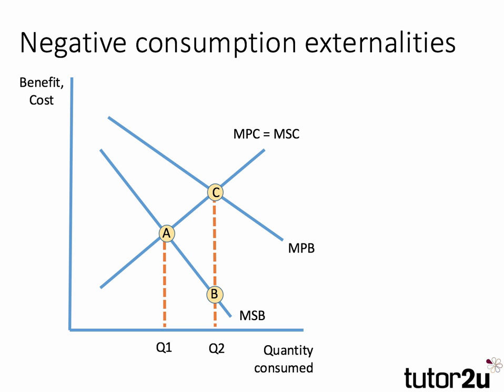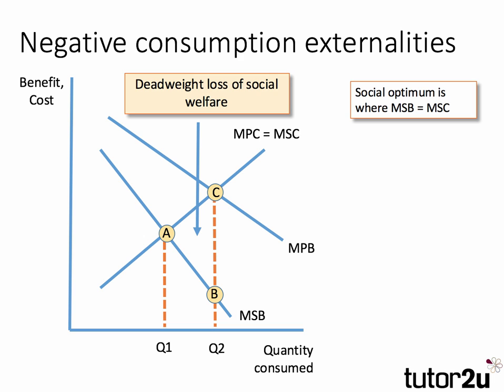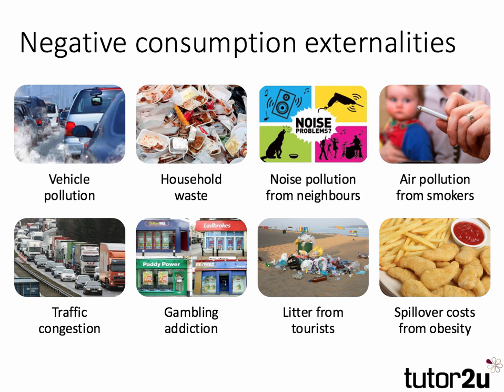Looking at negative consumption externalities: the marginal social benefit is below the marginal private benefit. Left to themselves, agents will consume output Q2 at point C, where marginal private cost equals marginal private benefit. However, that incurs a negative benefit of C, B on other people. The social optimum is a lower output Q1, where social cost and social benefit interact, and there's a deadweight loss of social welfare from over-consumption. Good examples include household waste, gambling addictions, litter, and fly-tipping.